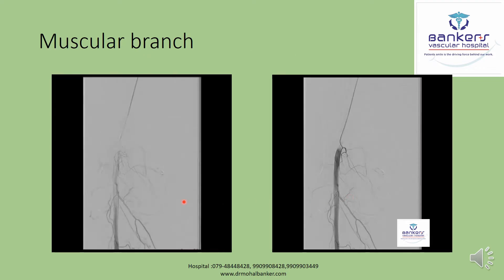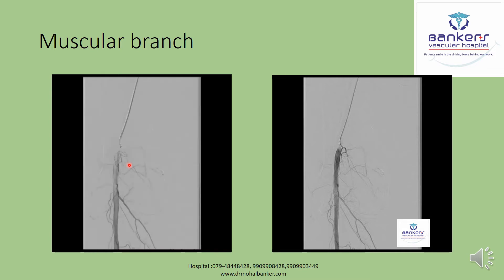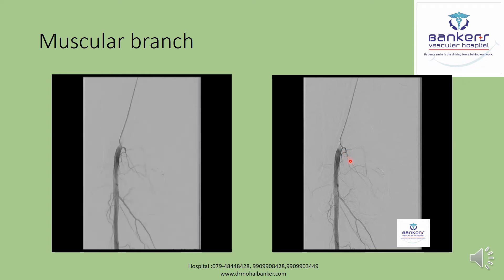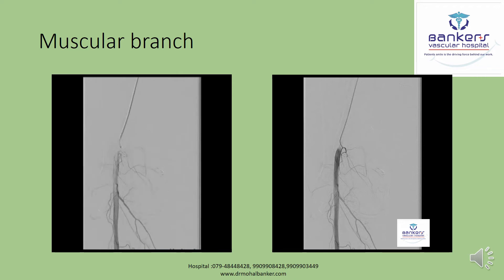Again, during angiography of different vessels, I found a muscular branch and out of curiosity performed angiography of this branch to rule out whether it was participating in the inflammatory reaction. You can see contrast flowing within this muscular branch, and one small branch does supply the pain-producing site, but there is no hypervascular blush. So this muscular branch is not participating in cytokine release.